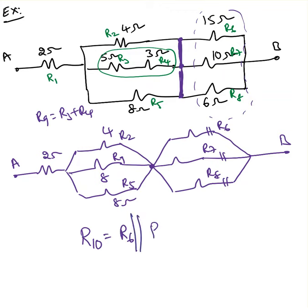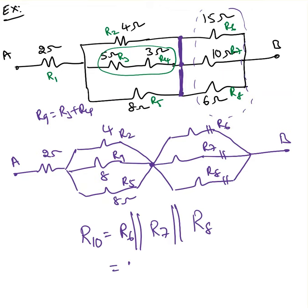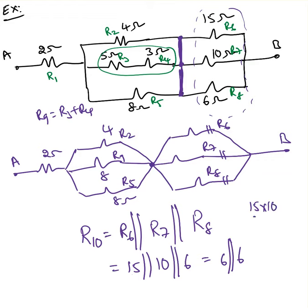R10 is R6 parallel with R7 parallel with R8, which is 15 parallel with 10 parallel with 6. So 15 parallel with 10: 15 times 10 divided by 15 plus 10 equals 150 divided by 25, which gives 6 ohms. Then 6 parallel with 6 equals 6 divided by 2, that's 3 ohms.